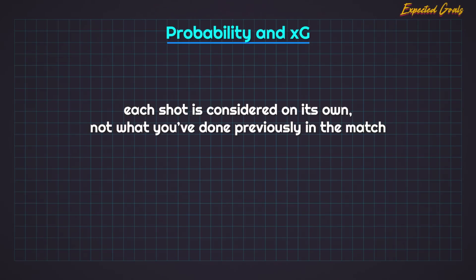Each shot is considered on its own, not what you've done previously in the match. That's why you should keep probability in the back of your mind when looking at the XG stat. As an example, if you flipped a coin 9 times and all 9 times it landed on heads — while unlikely — it still doesn't affect what would happen if you flipped it again. On the 10th flip, it would still have a 50-50 shot of landing on heads or tails regardless of previous results. This is the same idea with XG: just because you're adding shots to your total XG doesn't mean you're increasing the chances that each individual shot goes in.